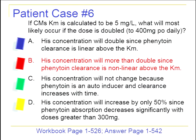Phenytoin is an inducer but not an auto-inducer — carbamazepine is the anti-epileptic that's an auto-inducer. Phenytoin also follows non-linear absorption: giving oral doses greater than 400 mg decreases absorption, so if a total daily dose exceeds 400 mg, it should be split so each individual dose is 400 mg or less. In this case, going from 200 to 400 mg is still at that threshold, so non-linear absorption is not the issue here.